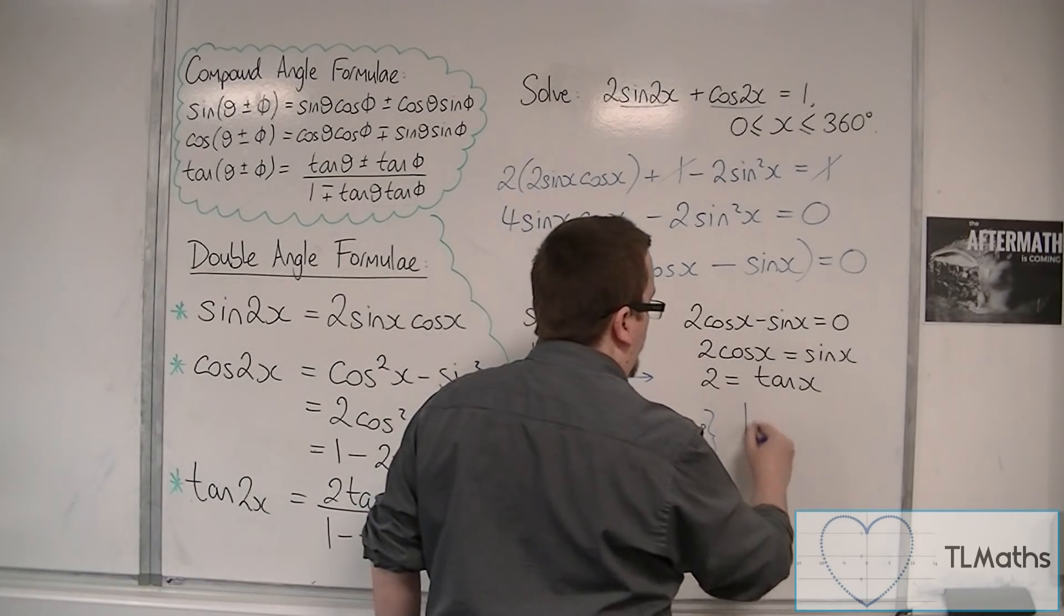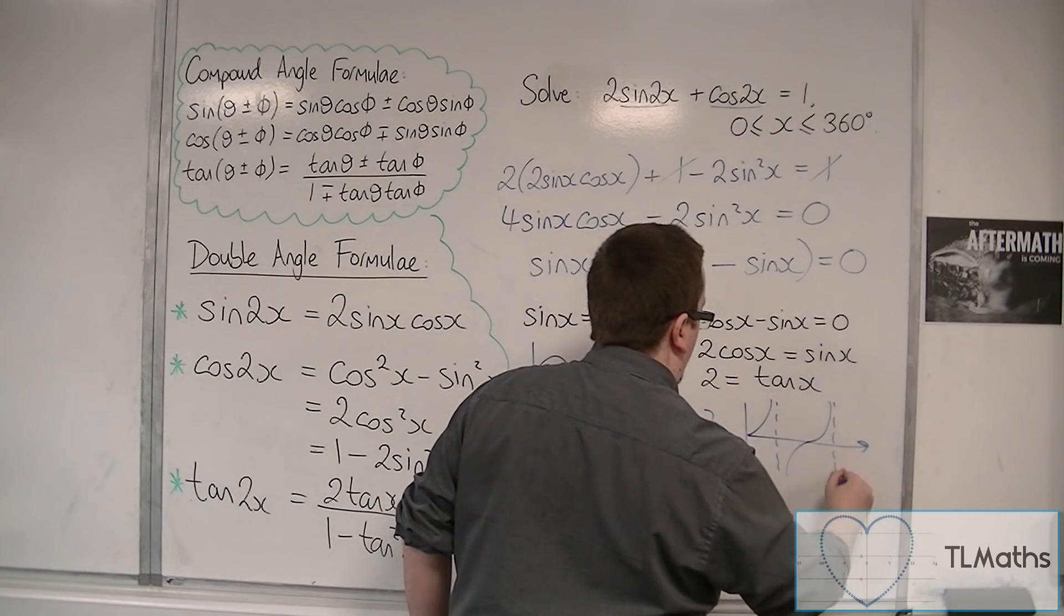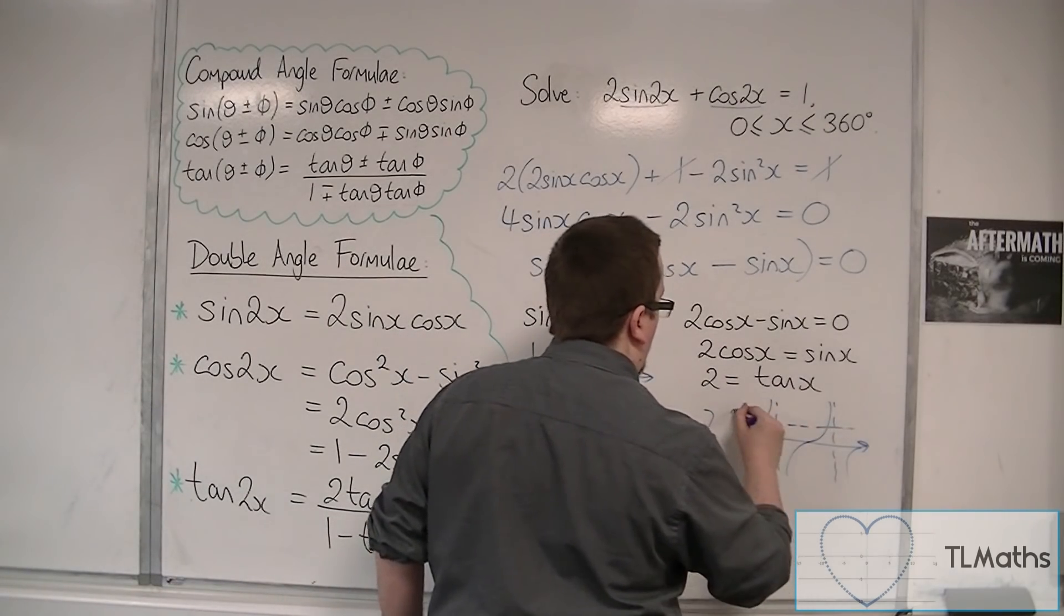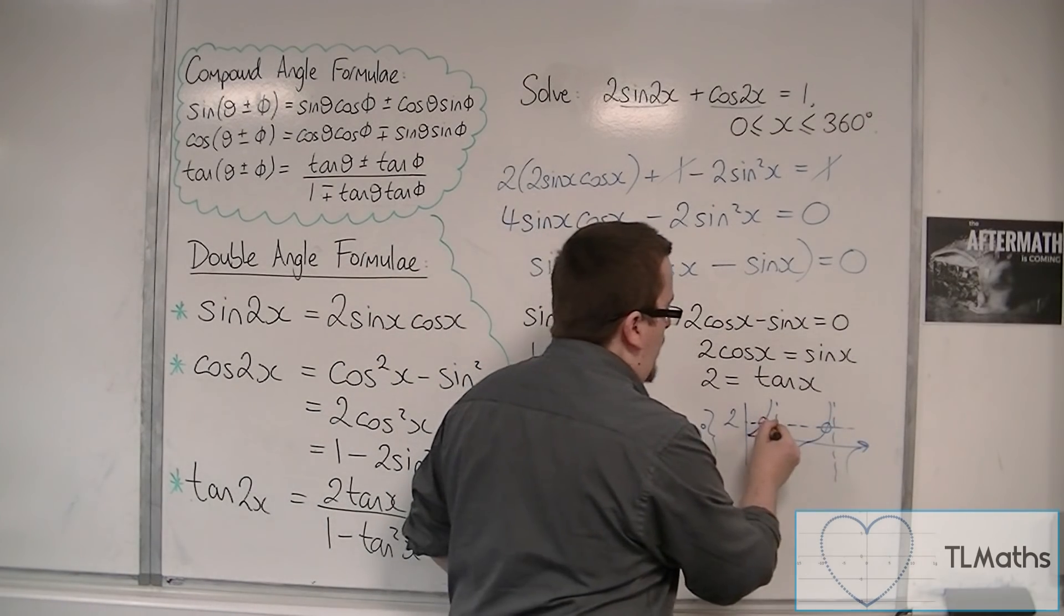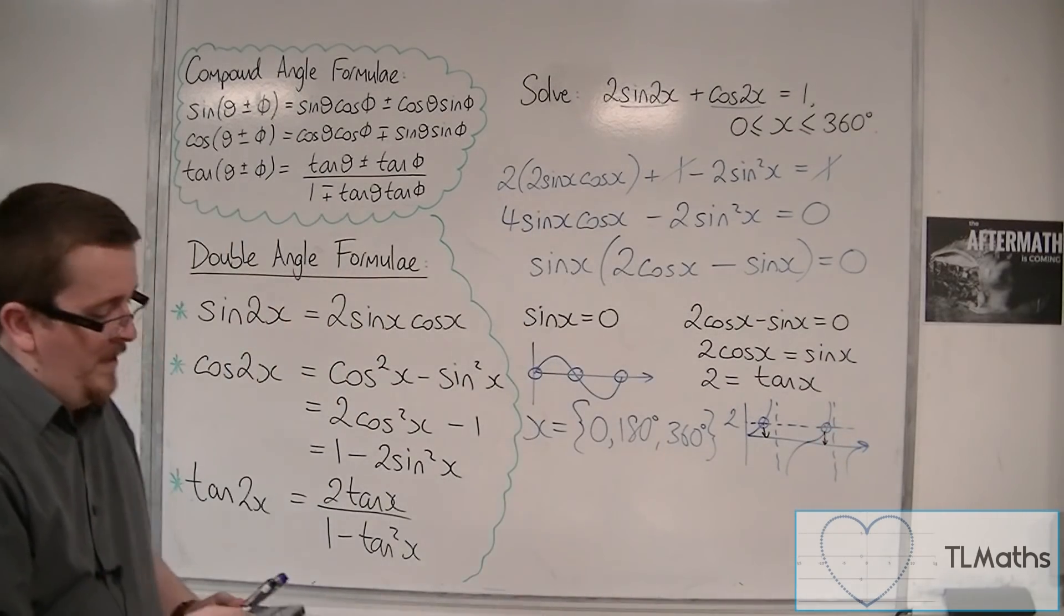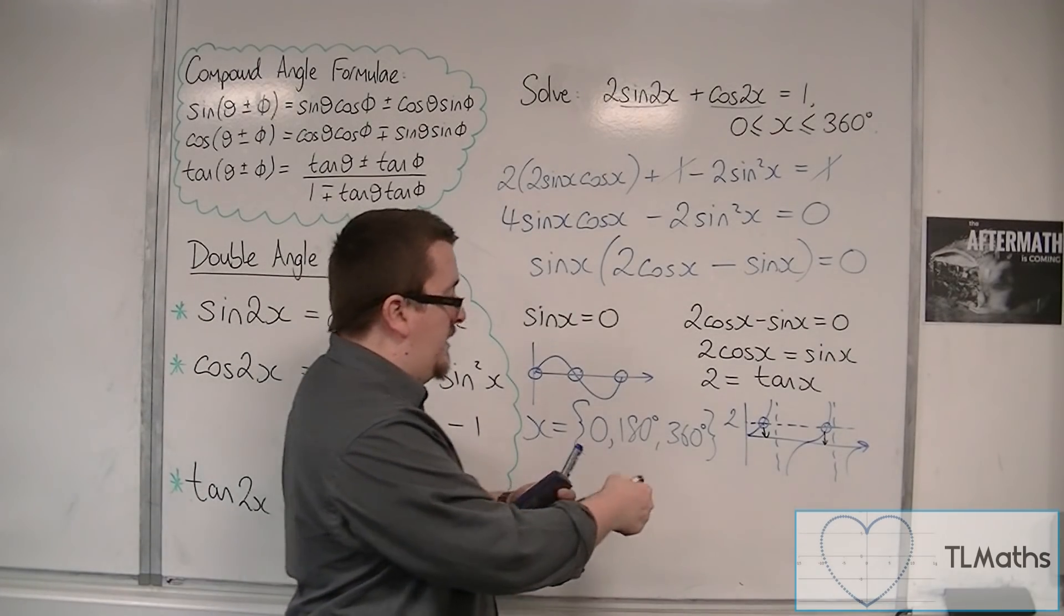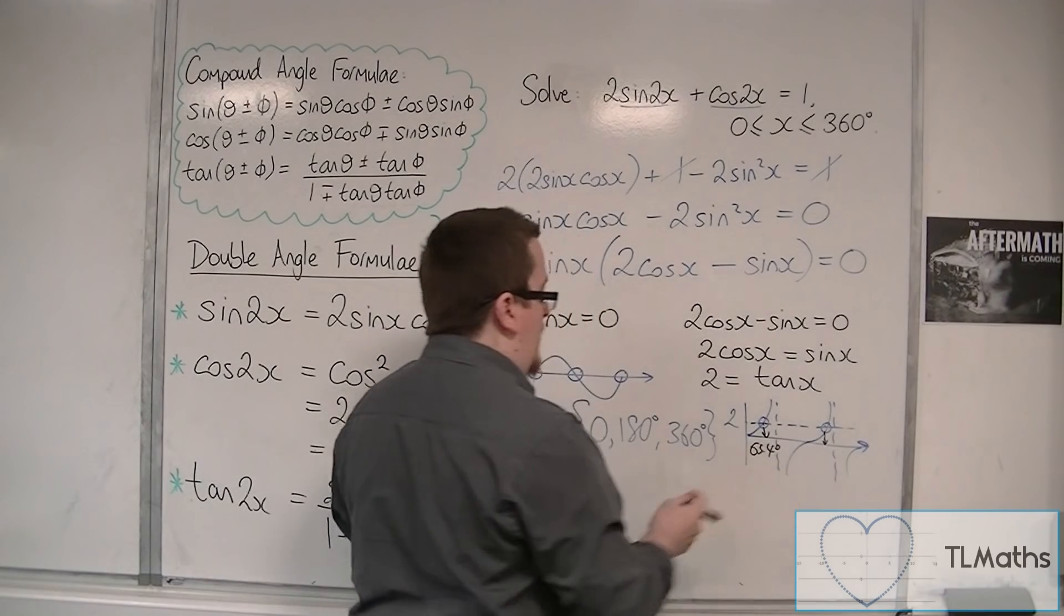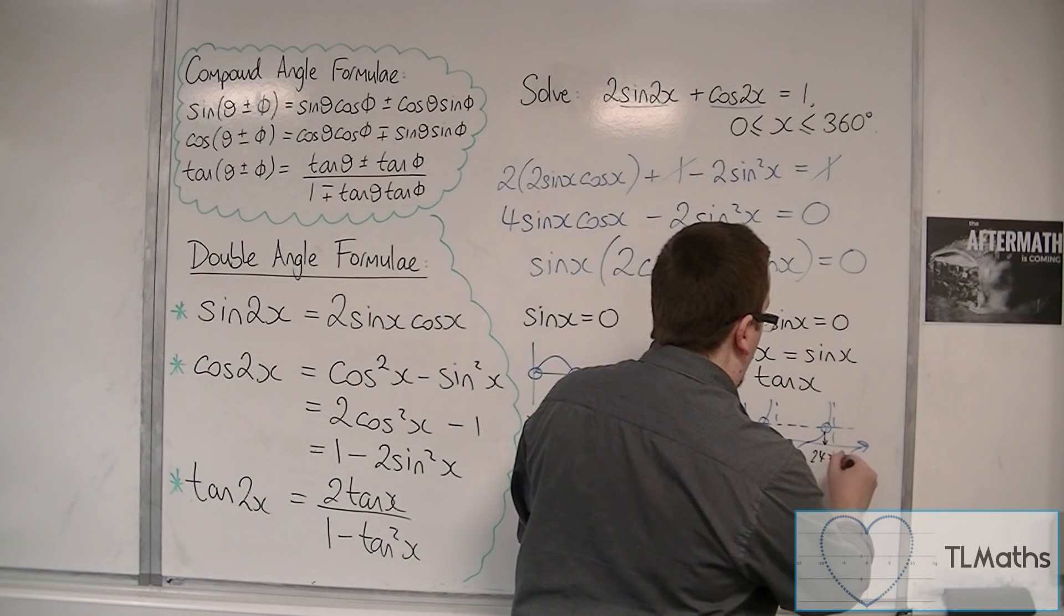So, now let's solve tan(x) = 2. A quick sketch of tan, between 0 and 360. 2 crosses the curve there and there. So, I need to do inverse tan of 2. We get our calculator. We make sure that we're in degrees. Inverse tan of 2 is 63.4 degrees to one decimal place. And then you can add 180 to get your second solution. So, 243.4.